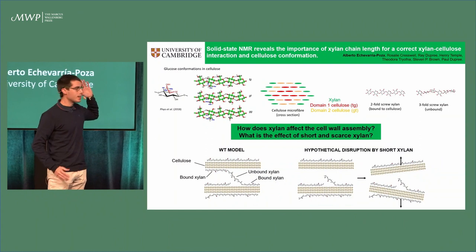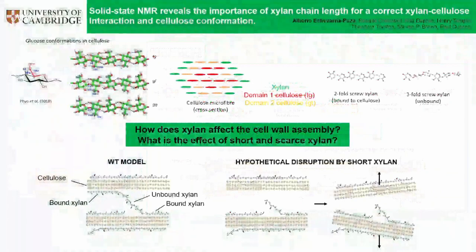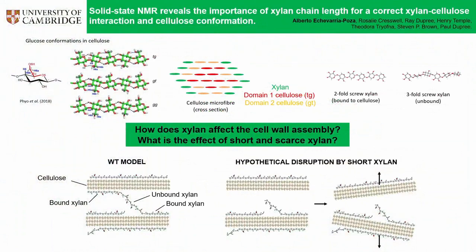Glucose is a ring of carbon atoms, but if we have a look there in red, you can see that one of those carbon atoms is actually out of the ring. This allows this carbon atom to rotate and adopt different conformations, such as those GG, GT, and TG conformations that are depicted there.